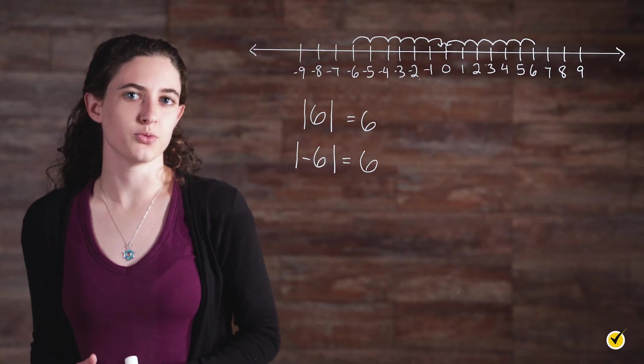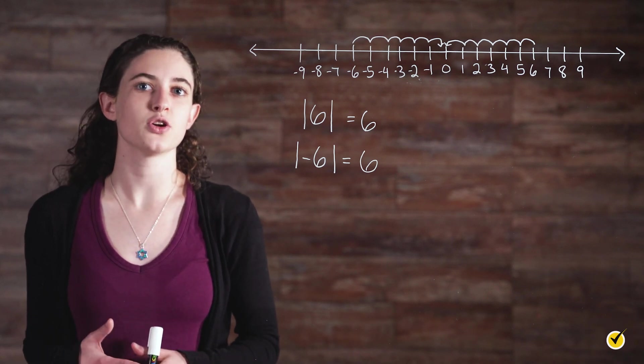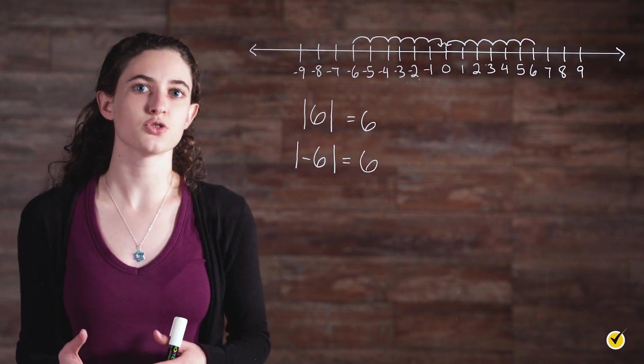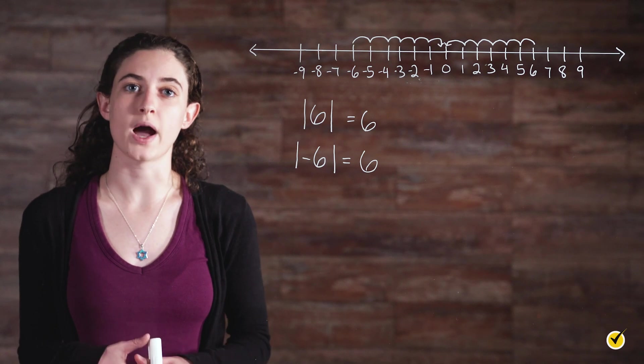No matter what number you're dealing with, big or large, positive or negative, the absolute value operation always yields a positive number. This is good to remember when evaluating expressions and solving equations, but it's also important to remember why.